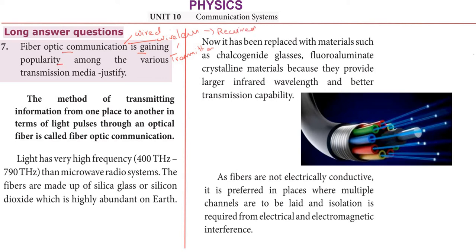This is wireless transmission. We also use wired communication when we need to connect and transfer data over a short distance. In wired communication, we use cables. There are different types of cables: twisted pair cable, coaxial cable, and optical fiber cable. So we use Fiber Optic Communication.